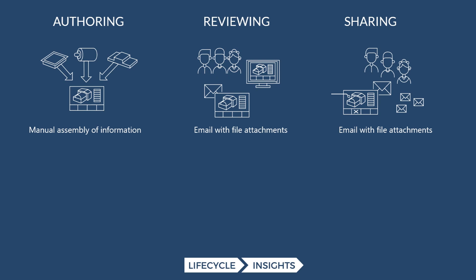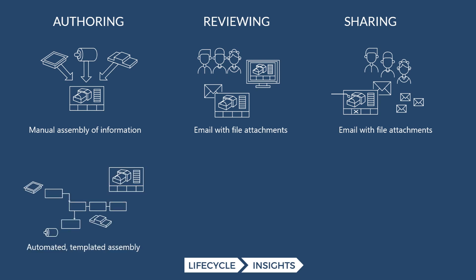Let's take a look at how the process looks a little bit different with Anarch. It starts with that authoring process. Instead of manually creating it, Anarch has almost a workflow engine that uses templates to automatically pull information from different sources and create that mashup deliverable that you want. This is automated, so it runs in a one-off fashion or in a batch mode.